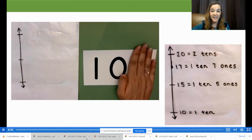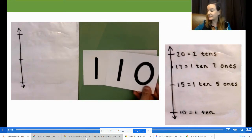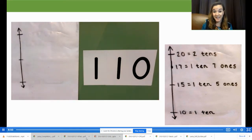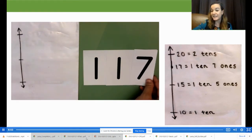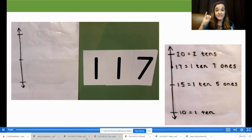When I cover the ones place, you can see the 10 tens that make up 100. What is one more ten than 10 tens? 11 tens. So how many tens are in 117? Discuss out loud.